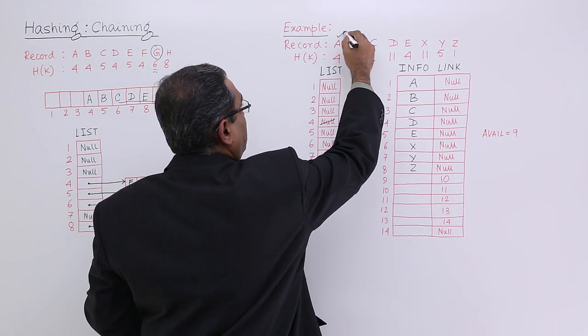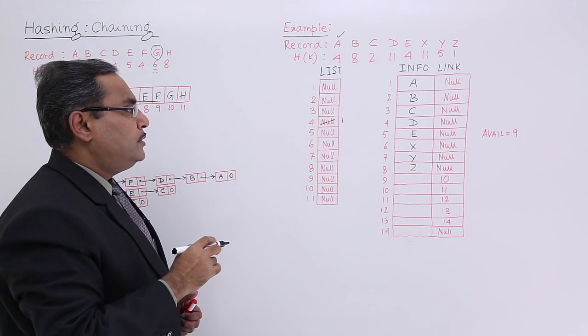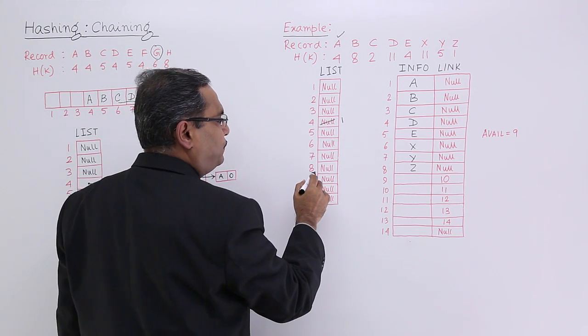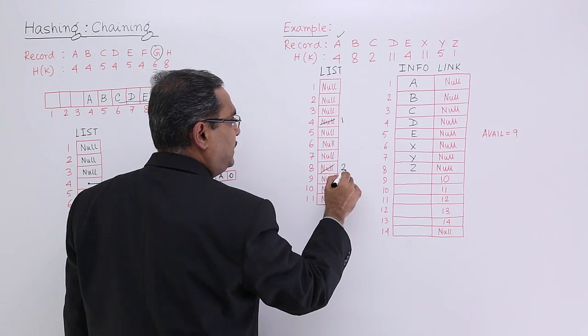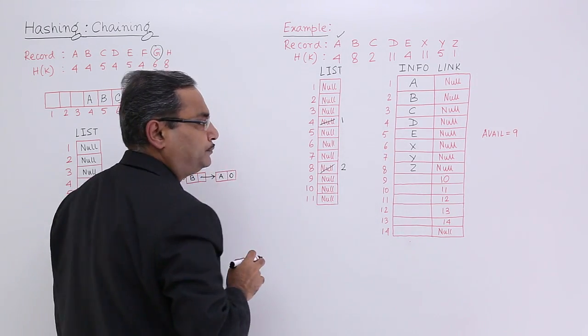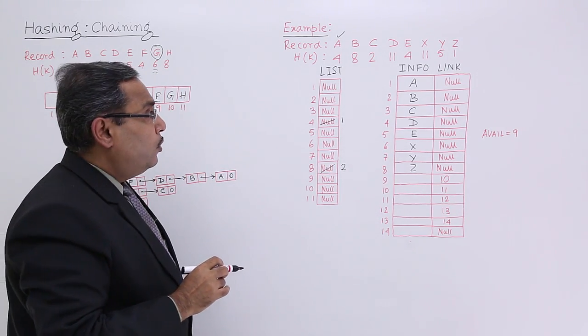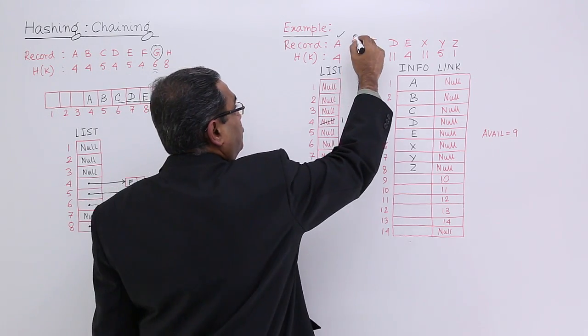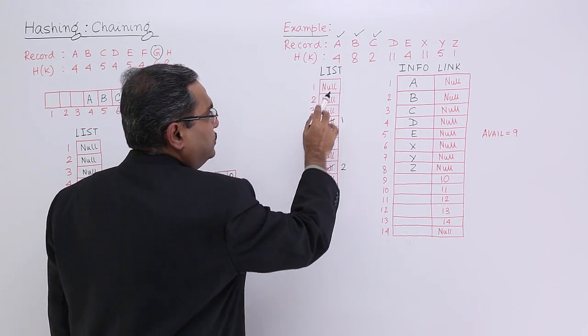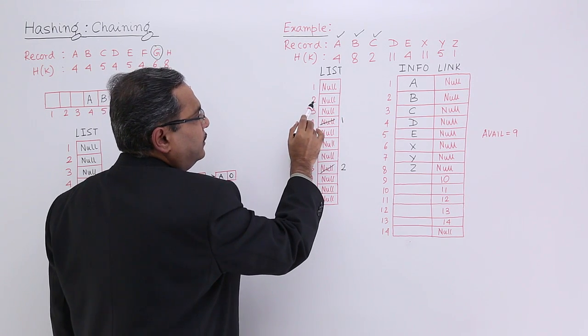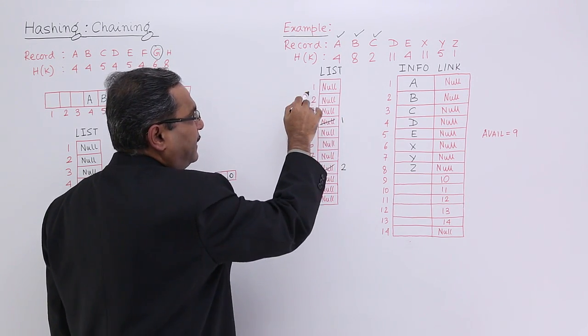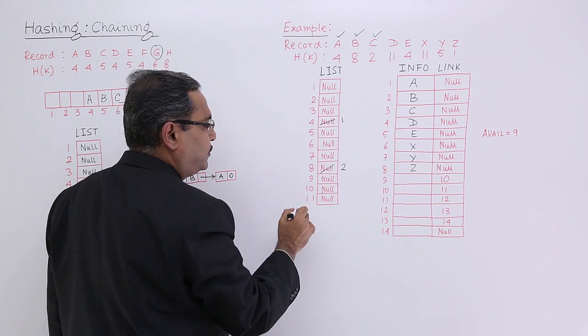We have considered this. Now B, 8. At the 8th location, I shall put the address for B, and B is having address 2. Now C, 2. We are going to C, 2. At the second location, because this is my h of k, at the second location I shall keep the address of C.